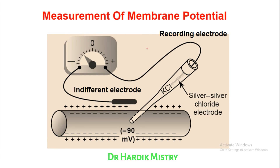To measure the membrane potential, a recording electrode is placed just inside the cell and a reference electrode is placed on the surface of the cell. The potential recorded on the voltmeter is around minus 90 mV. This is the simple procedure for recording the resting membrane potential of the cell.